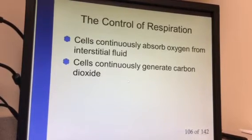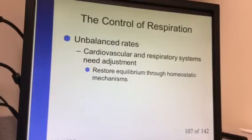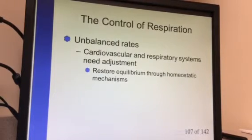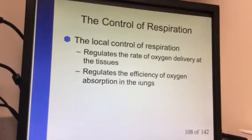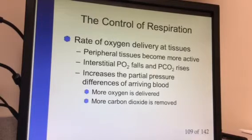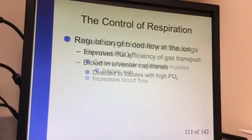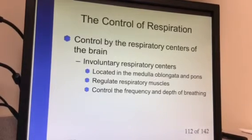Basically: how is our oxygen? How is our carbon dioxide? Do we have too much CO2 we need to blow off and need to go a little faster? Do we need more oxygen in the system? All these things deliver information back to the brain, and different sensors monitor our percentage of oxygen and CO2 — those are all how we control our respiration.